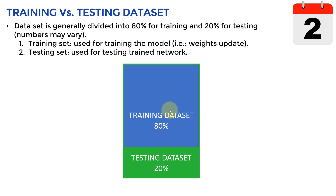A quick metaphor: assume you are a student studying a new topic like AI, and you plan to sit for an exam. As a professor, we give you assignments so you understand the concepts. On the exam, we don't give you the exact same assignments — it doesn't make sense to give the exact same questions with the same numbers, because someone could just memorize without understanding. We want to make sure the concepts have been understood, and it's the same idea when training AI models.